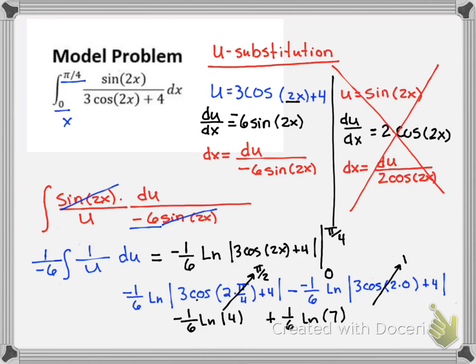Of course, these have to be equivalent each way. Equals 1/6 ln of 7 minus 1/6 ln of 4. That's the same as we had the other way. And follow me next time. That's it. Bye-bye.